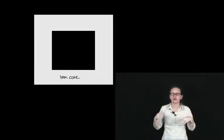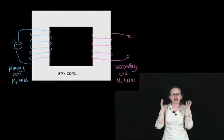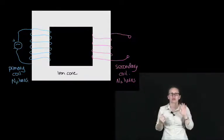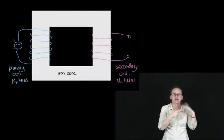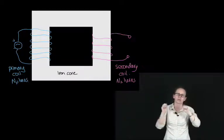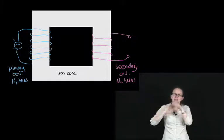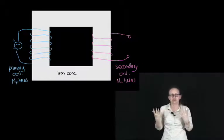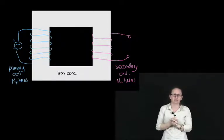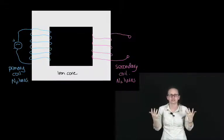The transformer is what really won the war for AC current. A transformer consists of an iron core, around which we have two coils of wire: the primary coil, through which we send an alternating current, and the secondary coil, where we get the current out of the transformer at its new voltage.